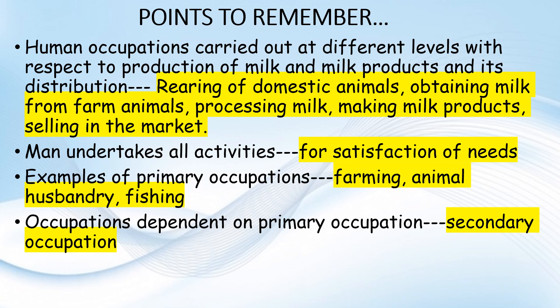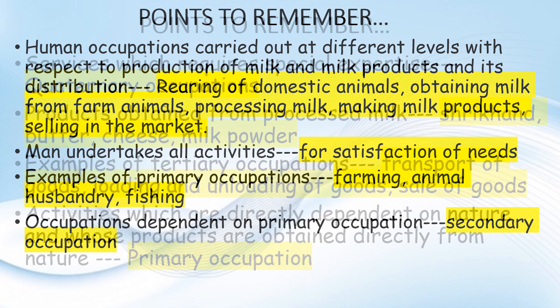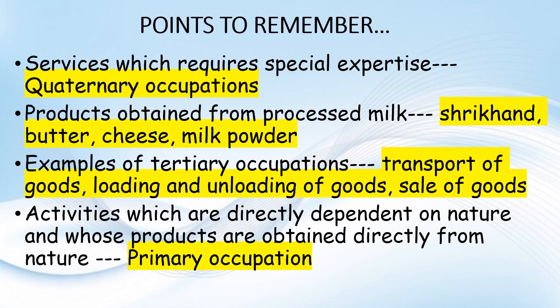Man undertakes all activities for the satisfaction of his needs. Examples of primary occupations: farming, animal husbandry, fishing. Occupations dependent on primary occupation are secondary occupations. Don't worry — I'll be explaining each and everything in depth in your next video, so you will understand it fine.